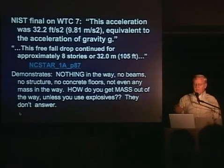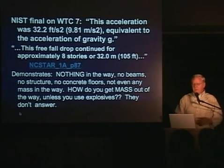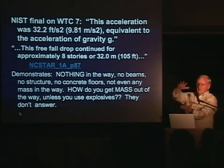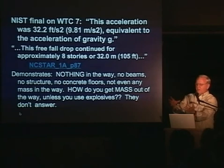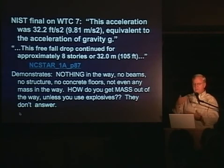This free fall drop demonstrates that there was nothing in the way — no beams, no structure, no concrete floors, no significant mass. Now how do you get mass out of the way? Explosives. Is there any other way? They didn't answer. In a model in which you have the floors still there because you didn't use explosives, so the floors are intact, as the upper structure hits the floors below — the stationary floors — it slows down the structure. It's just like when you hit something in the way of your car, perhaps a smaller car. It doesn't matter how small it is, it slows you down some. That's conservation of momentum. In order for there to be free fall, which means nothing slowing you down, it means there's nothing significant in the way. And they did not explain, they don't answer how this could happen.